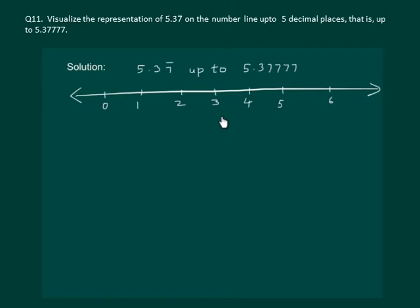Consider the number line. Then 5.37 bar will lie between 5 and 6. Let us divide it into 10 equal parts.